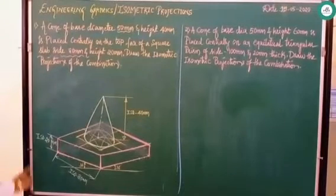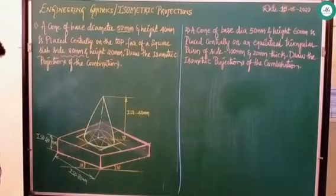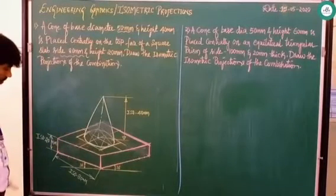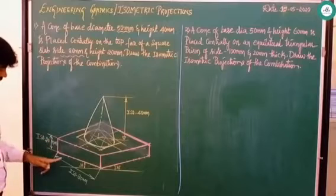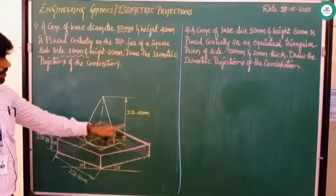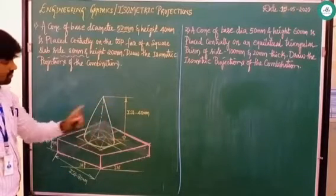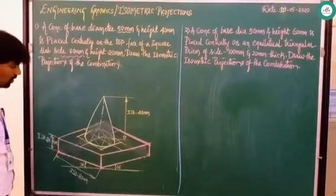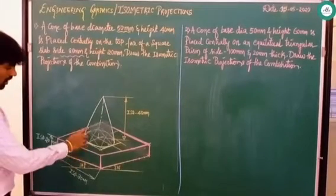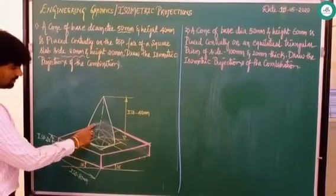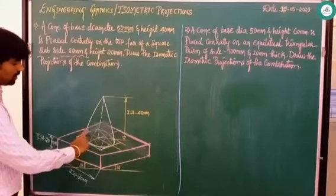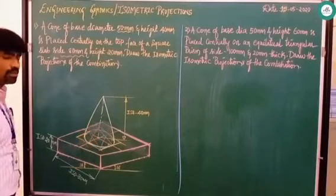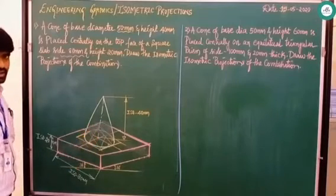After completing this problem, you can also show the dimensions. This is ISO 20, this is ISO 80, and this is ISO 40. The hidden construction lines can be drawn with a thin line or completely erased.